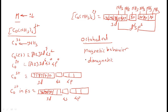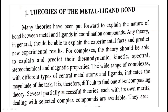Valence bond theory explains the nature of the bond between the metal and the ligand as purely covalent or coordinate covalent. So VBT has explained very well the bonding between the metal and the ligand. But it could not explain other properties of the complexes.